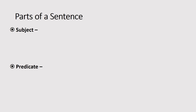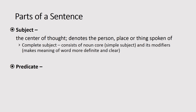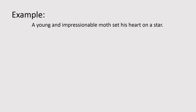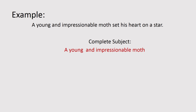Of course, you're familiar with the parts of a sentence: the subject and the predicate. The subject is what's being talked about in your sentence, and the predicate is anything that tells something about your subject. For example: 'A young and impressionable moth set his heart on a star.' What is being talked about? 'A young and impressionable moth' — that's your complete subject. What is said about it? 'Set his heart on a star' — that's the predicate.